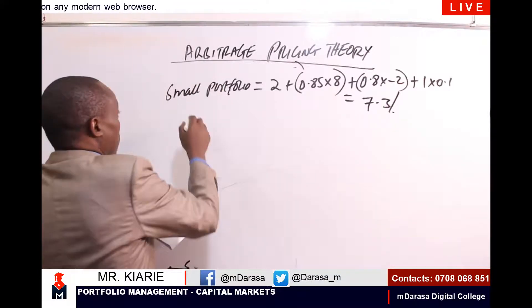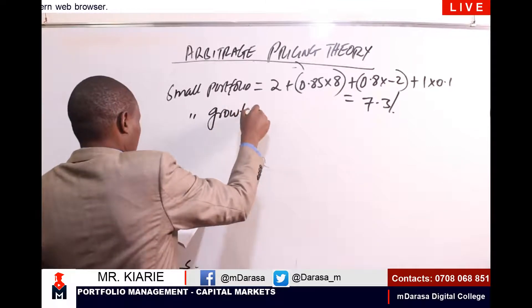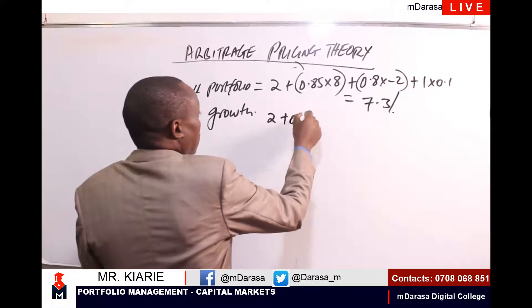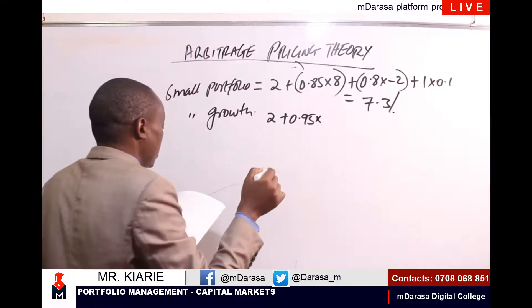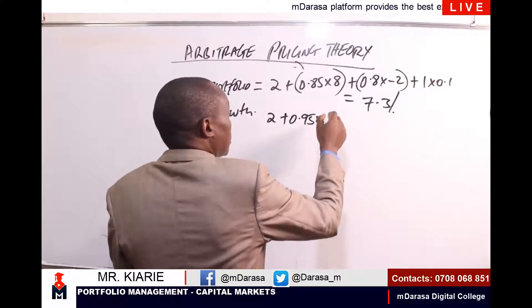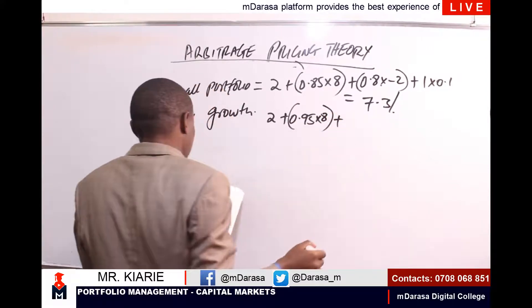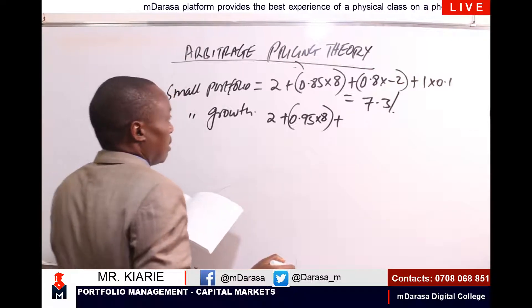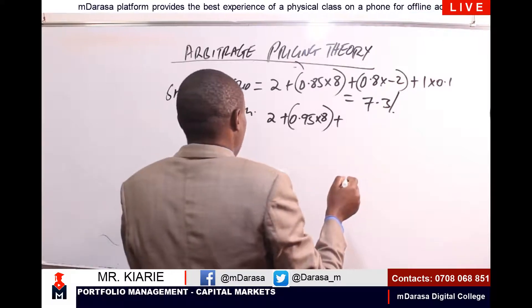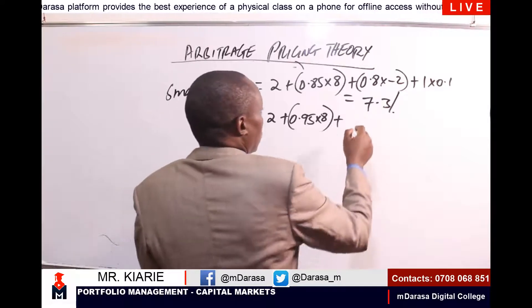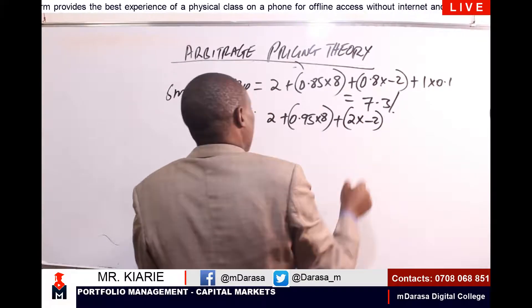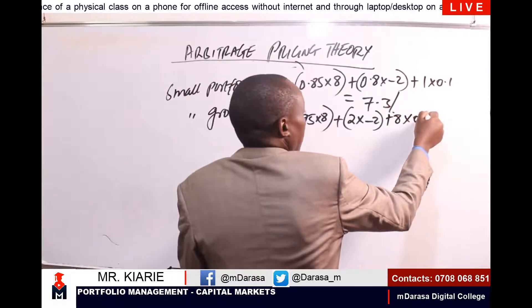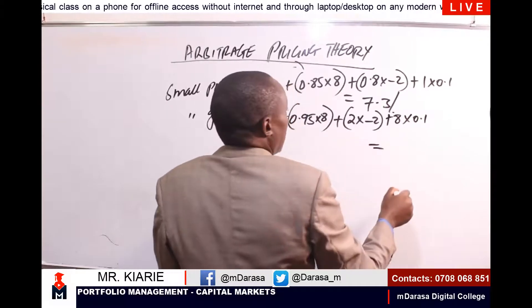Then for the small growth portfolio: it is the risk-free rate of 2, plus 0.95 multiplied by the risk premium of 8%, plus the next factor of 2 multiplied by negative 2, plus 8 multiplied by 0.1. Once you work that out, it gives 6%.